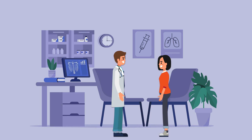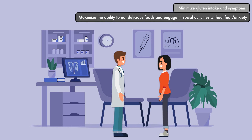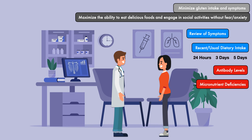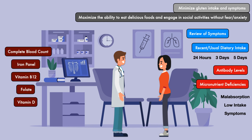As a registered dietitian, working with someone with celiac disease requires you to find a way to minimize gluten intake and symptoms and maximize the ability to eat delicious foods and engage in social activities without fear or anxiety. Each session should include a comprehensive review of symptoms and recent or usual dietary intake using a dietary recall for 24 hours, 3 days, or 5 days. Dietitians may also consider assessing blood antibody levels and for specific micronutrient deficiencies guided by concern for malabsorption, low intake, or any specific symptoms the patient presents with. Common laboratory tests include a complete blood count, an iron panel, vitamin B12, folate, and vitamin D.